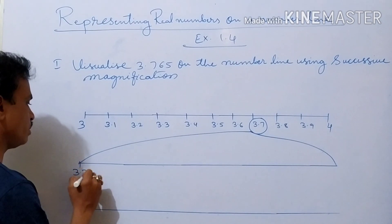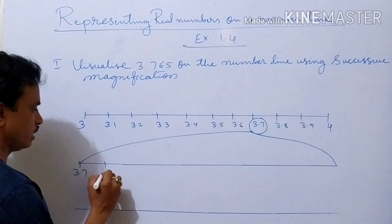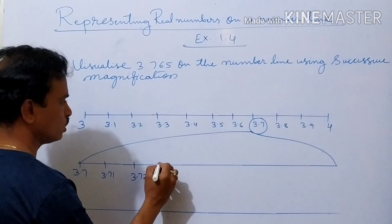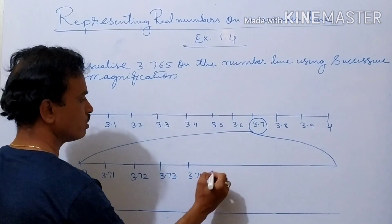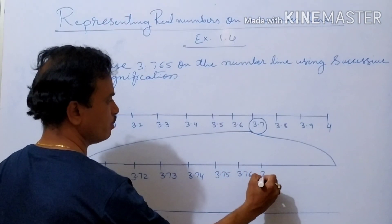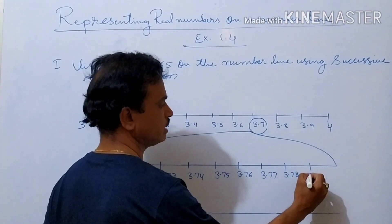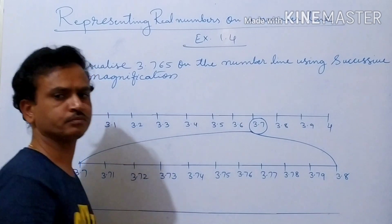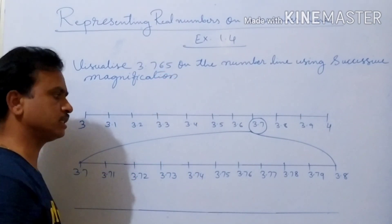Again, first point: what we should do for 3.765 — make 10 parts. 3.71, next point 3.72, next 3.73, next 3.74, next 3.75, next 3.76, next 3.77, next 3.78, next 3.79, then here 3.8.